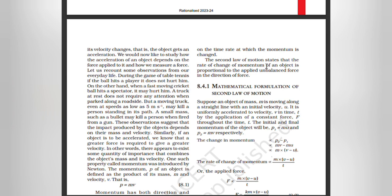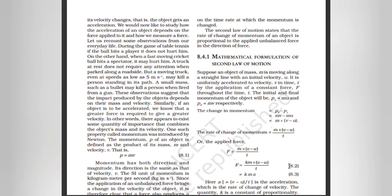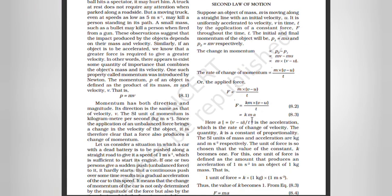The second law of motion states that the rate of change of momentum of an object is proportional to the applied unbalanced force in the direction of the force. Mathematical formulation: suppose an object of mass m is moving along a straight line with initial velocity u. It is uniformly accelerated to velocity v in time t by the application of constant force F throughout time t. Initial and final momenta are p₁ = mu and p₂ = mv respectively. Change in momentum is proportional to p₂ − p₁ = mv − mu = m(v − u). Rate of change of momentum = m(v − u)/t. Applied force F is proportional to m(v − u)/t, so F = kma, where a = (v − u)/t is the acceleration.